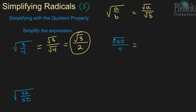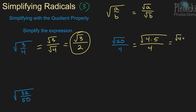Okay, the next one, we have the square root of 20 over 4. So the square root of 20, we can rewrite as the square root of 4 times 5, and that's over 4. And then we can rewrite that as the square root of 4 times the square root of 5, using the product property. And that's still over 4.